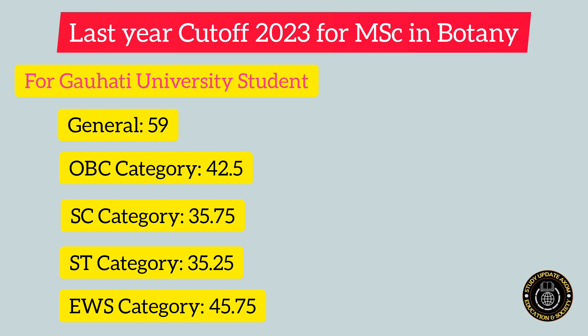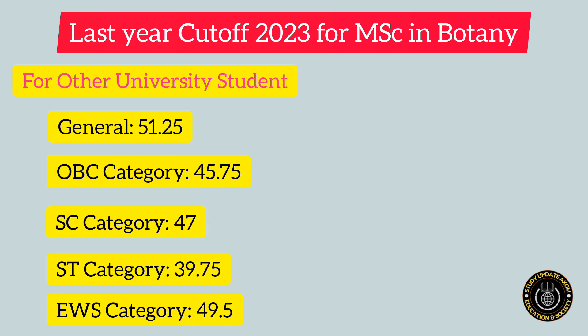For ST category, including ST Hills and Plains, the cutoff was 35.25. For students who belong to EWS category, the cutoff was 45.75. I think this year the cutoff may go higher to an extent, as the questions were easier compared to previous years, and I have also consulted a few students who confirmed that the questions were easier. Now let's see what the cutoff was for other university students.